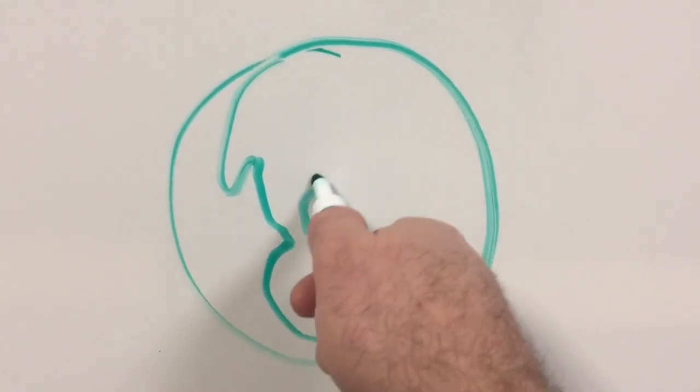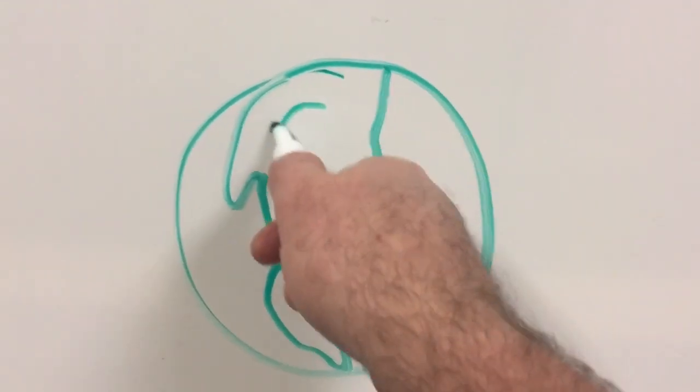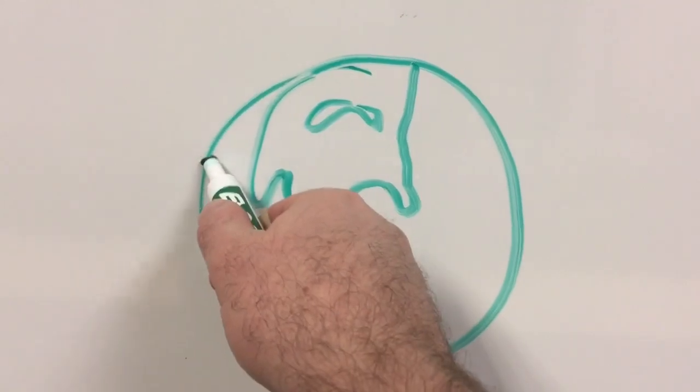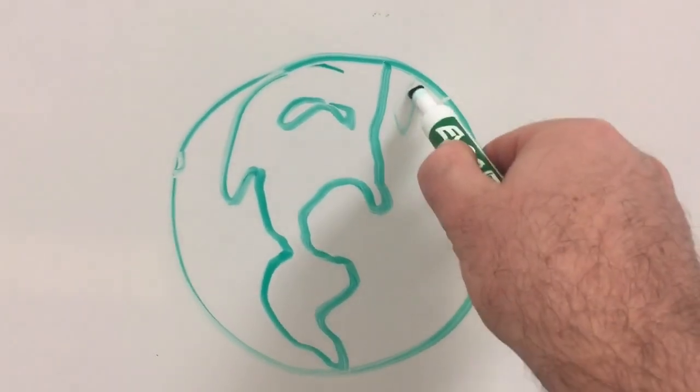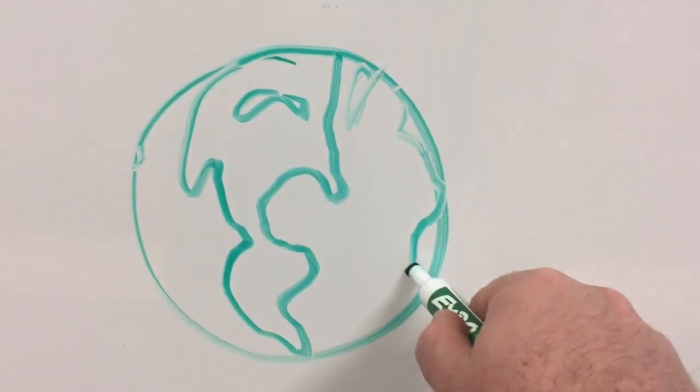That little line on the left is Baja California. I grew up in the USA, so I tend to think of when I draw the earth, I tend to put the USA in the center of things, as most Americans do.